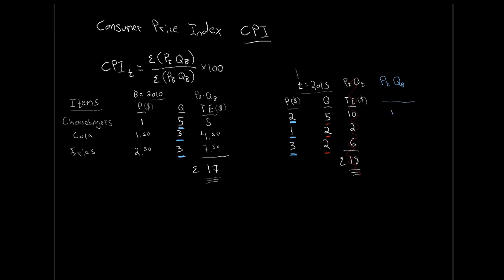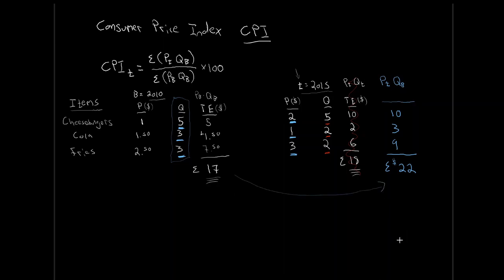Using base year quantities with today's prices: 2 × 5 = 10, 1 × 3 = 3, 3 × 3 = 9, giving us $22. So that same fixed basket of goods that cost $17 in 2010 would cost $22 five years later in 2015. We can't have both prices and quantities changing if we want to measure a change in price level. To truthfully measure a change in price level, we have to hold our quantities constant.